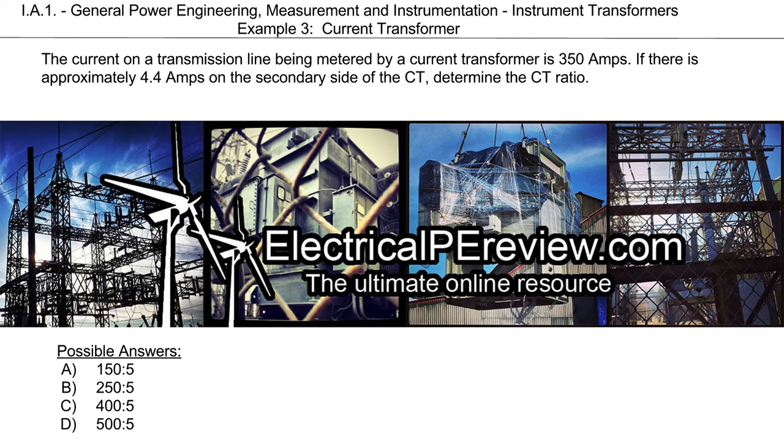The current on a transmission line being metered by a current transformer is 350 amps. If there is approximately 4.4 amps on the secondary side of the CT, determine the CT ratio.